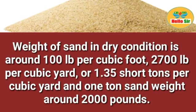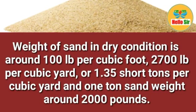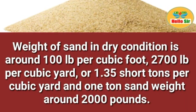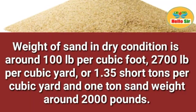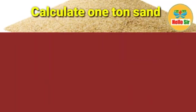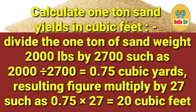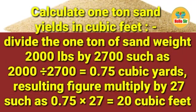The weight of sand in dry condition is around 100 pounds per cubic foot, 2700 pounds per cubic yard, or 1.35 short tons per cubic yard. One ton of sand weighs around 2000 pounds. To calculate how many cubic feet one ton of sand yields, divide 2000 pounds by 2700.